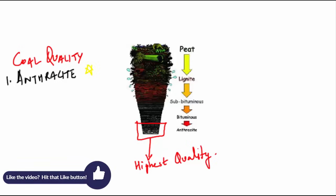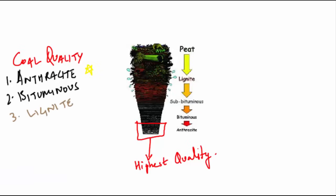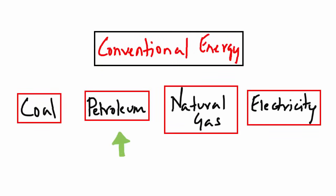And the second one will go to bituminous coal. And the last one is lignite which is low-grade brown coal. Petroleum is the second form of conventional sources of energy.